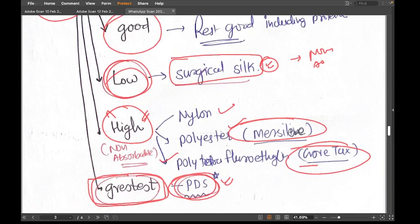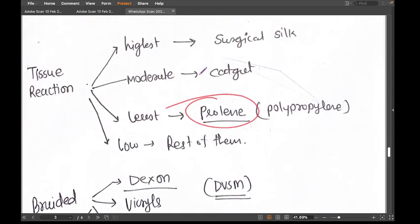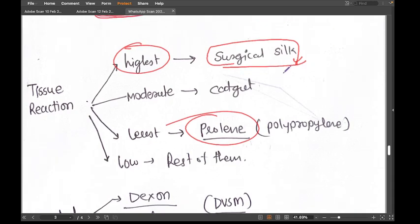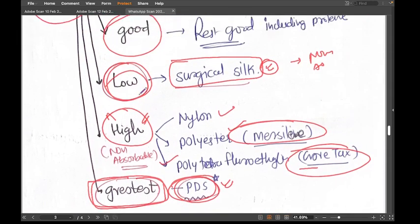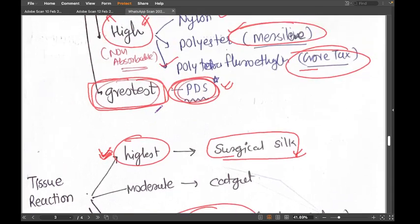Tissue reaction is also a subjective description. Tissue reaction is highest with surgical silk — we can see that surgical silk has many negatives: highest tissue reaction and low tensile strength.